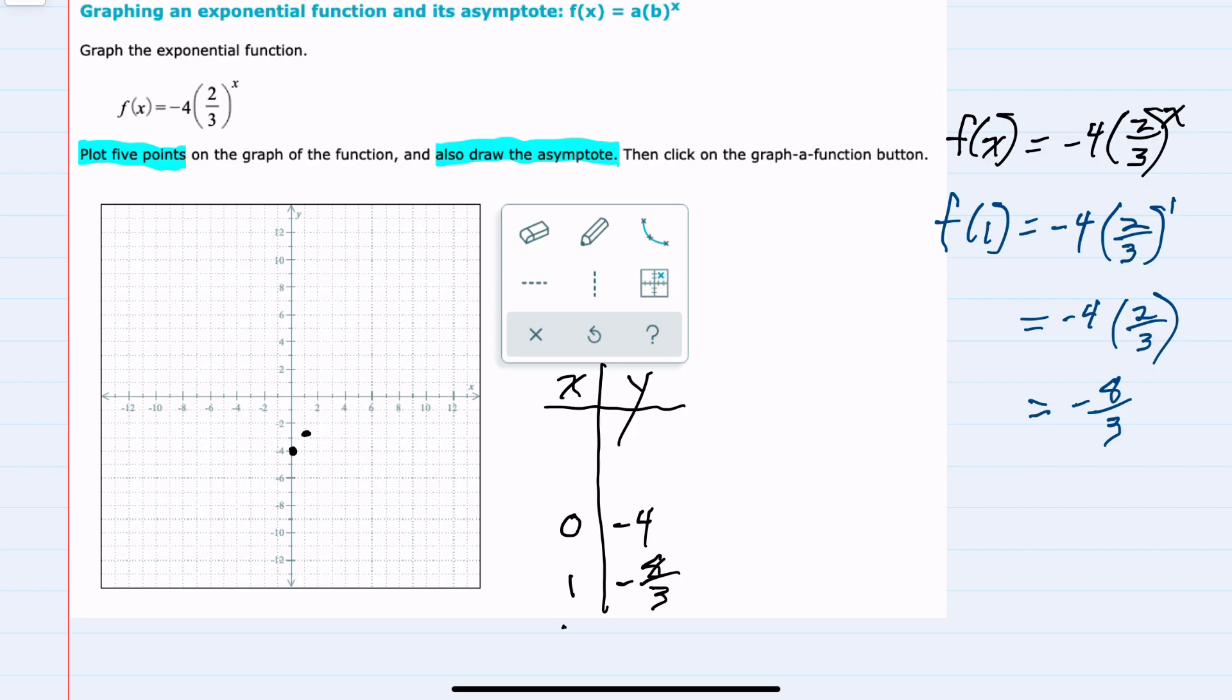And then I can also substitute in x equals two, and replacing x with two means that we would start with evaluating two-thirds to the second power, and squaring everything in the parentheses would give us four-ninths. This time, simplifying, we have negative sixteen-ninths, which is less than negative two.